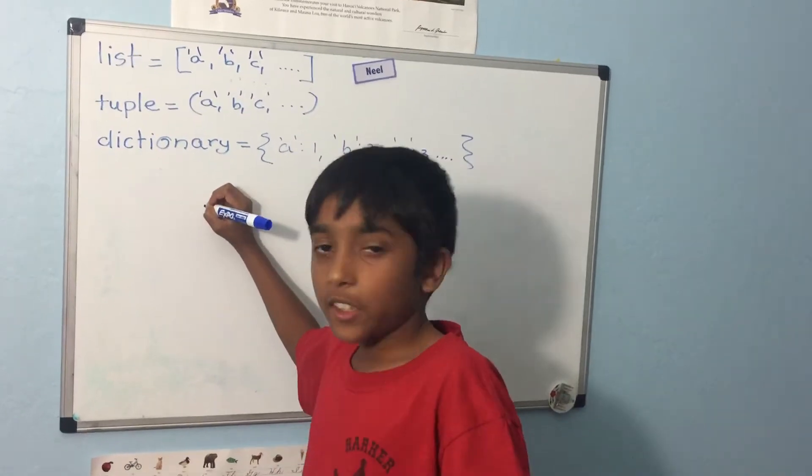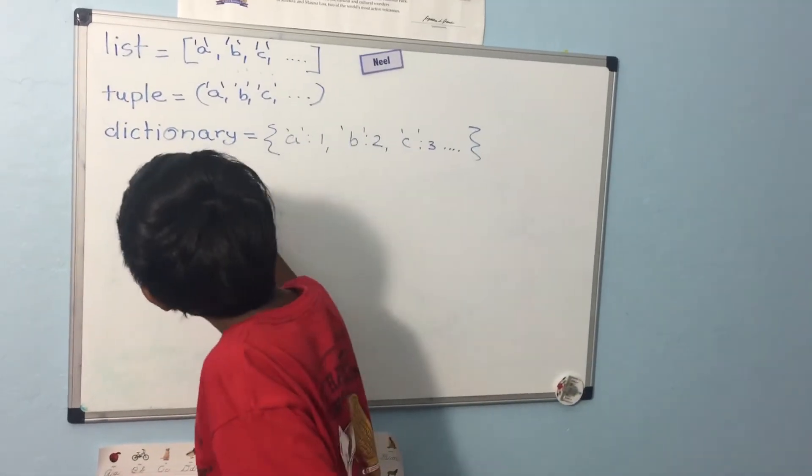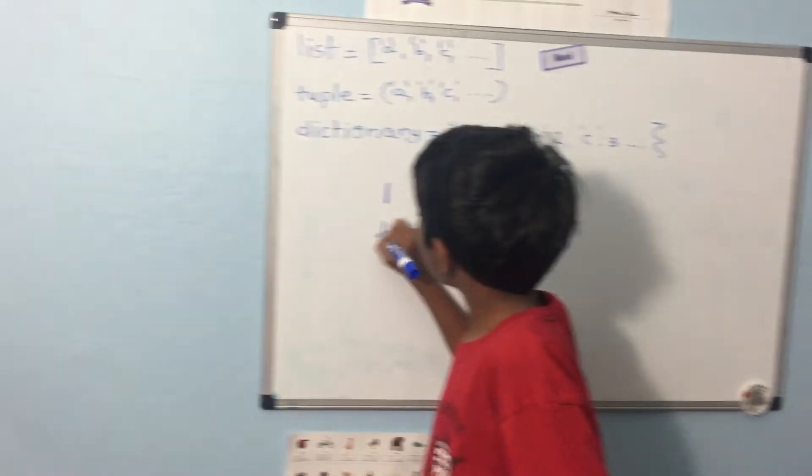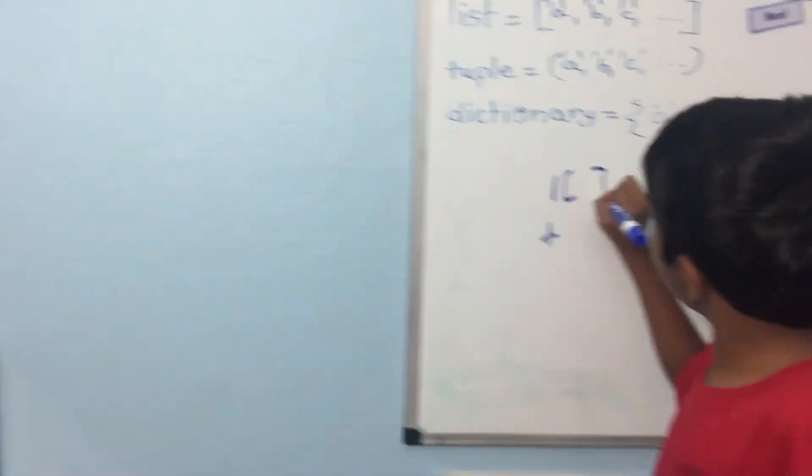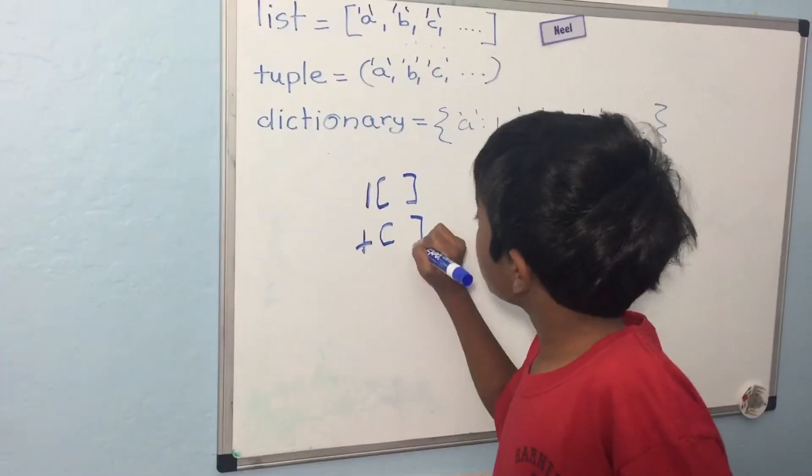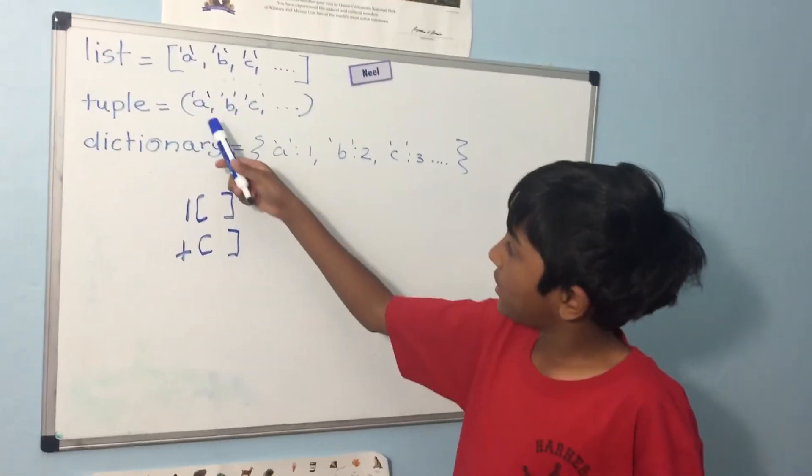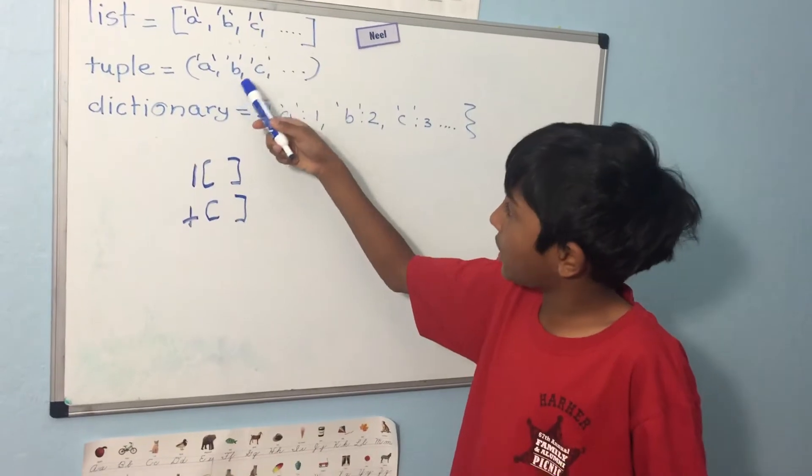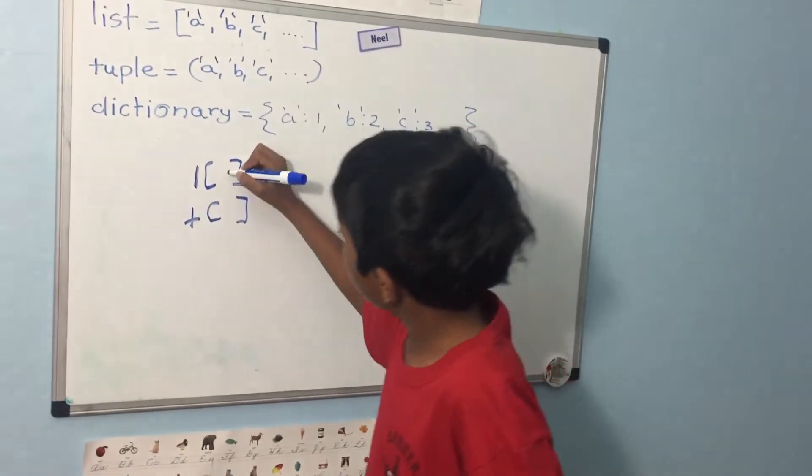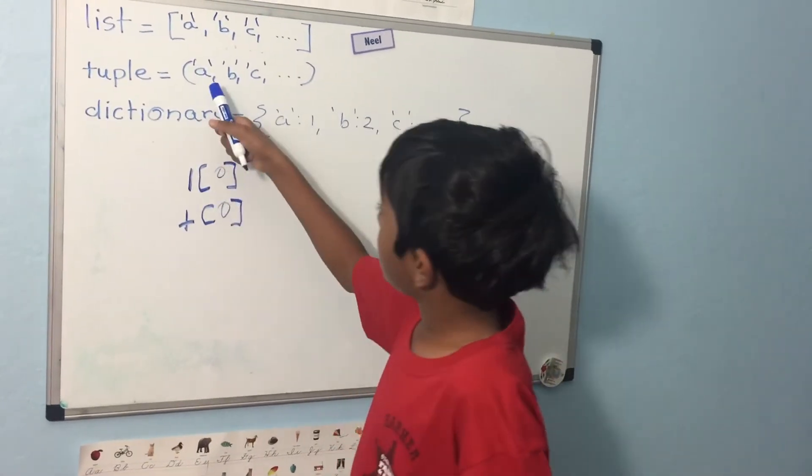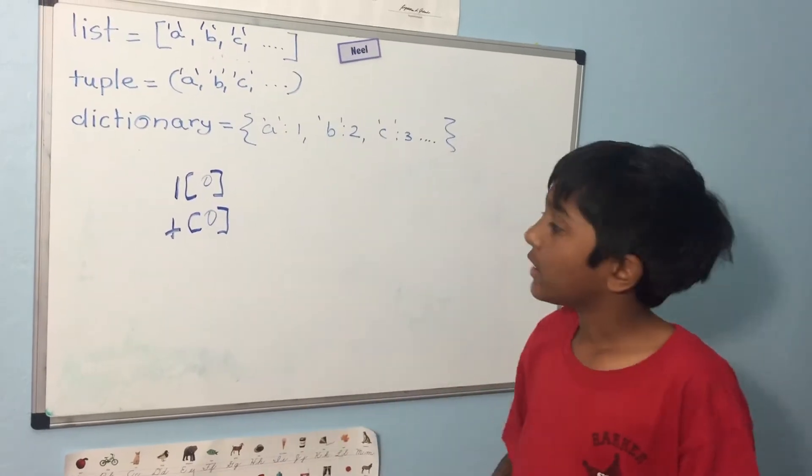When you want to retrieve data from them you do the name of the list or the name of the tuple and then in square brackets you write the index of one of the elements. This is zero, this is one, this is two and so on. So zero will do a.